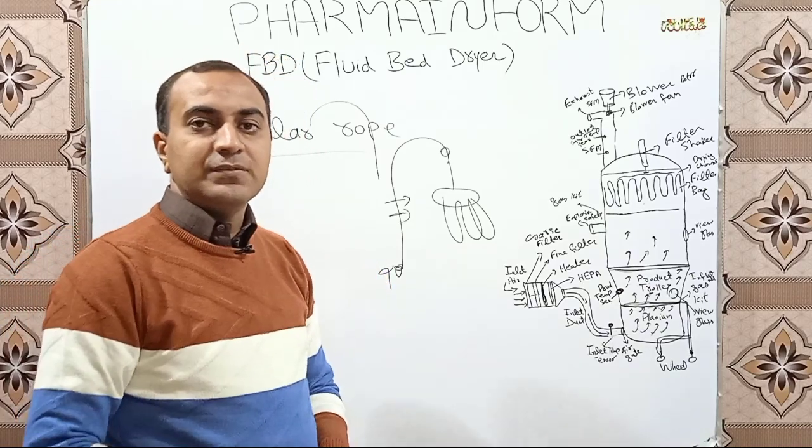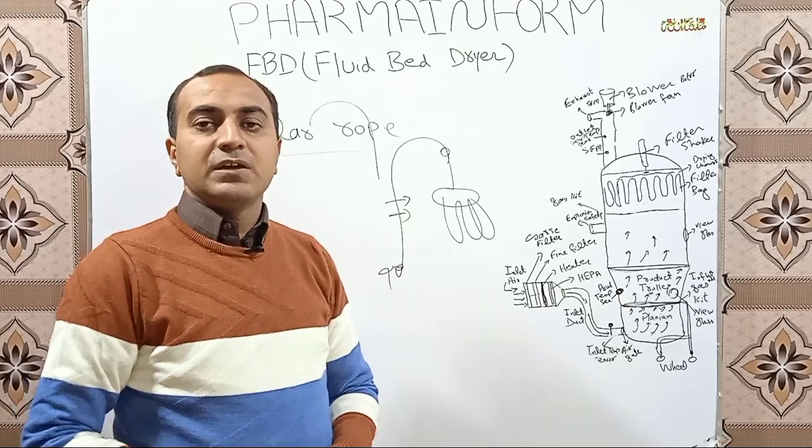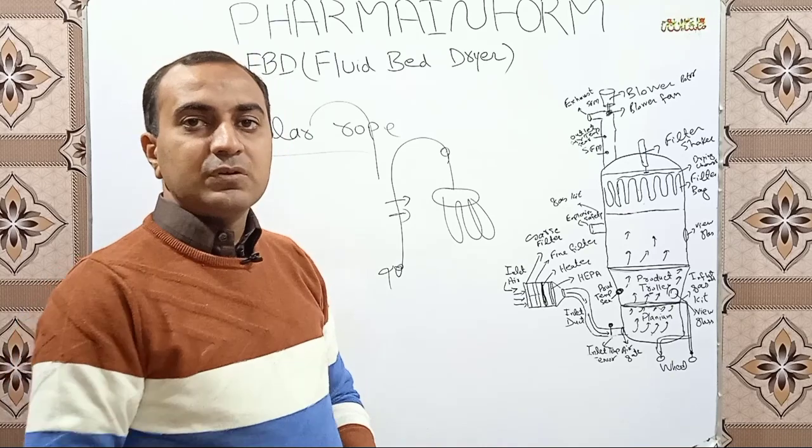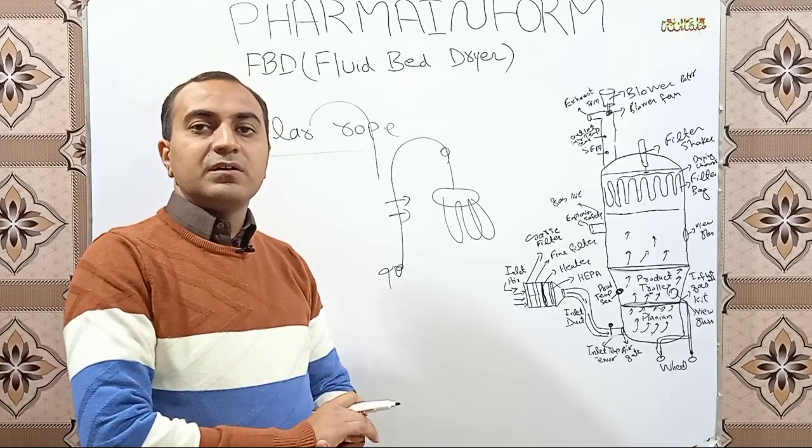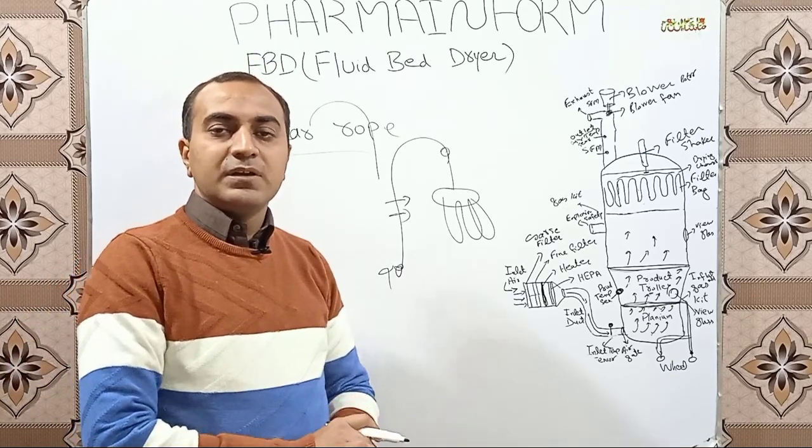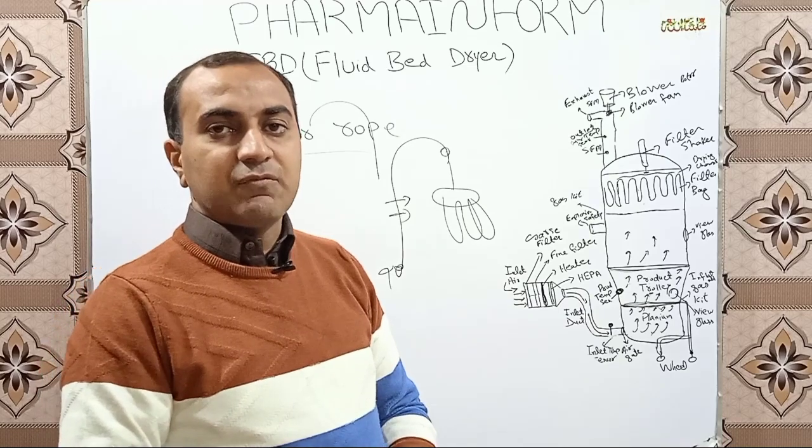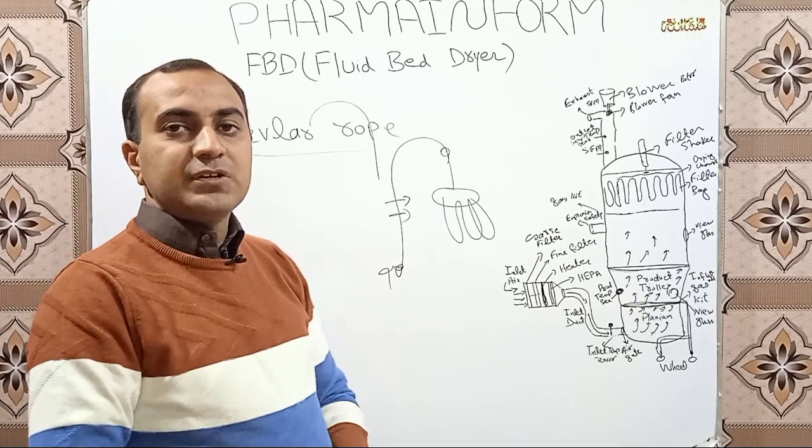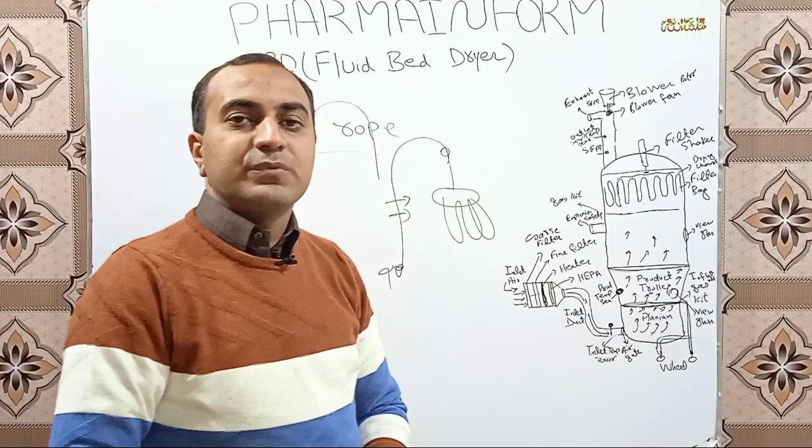So this rope is known as Kevlar rope, means the rope which holds the filter bags or finger bags at its place in fluid bed dryer and also used to shake the fluid bed dryers is known as Kevlar rope.